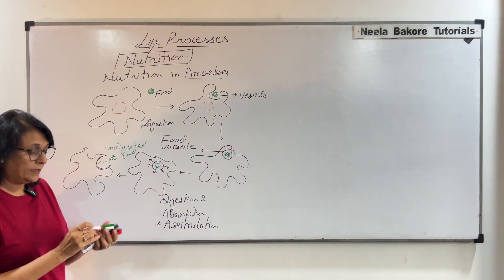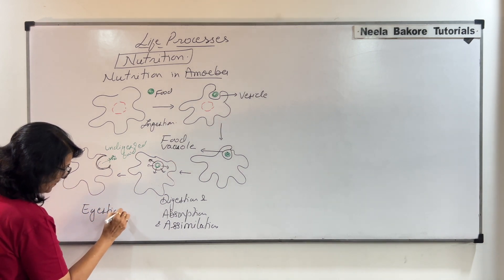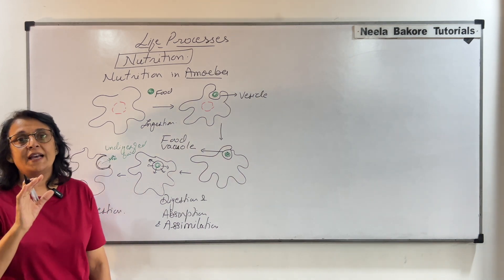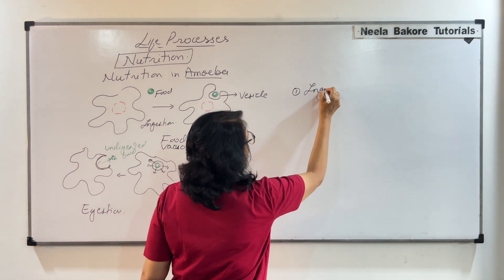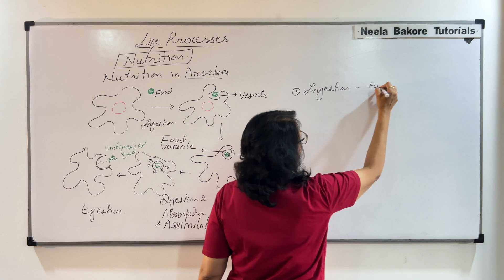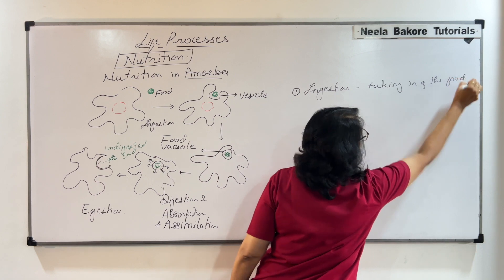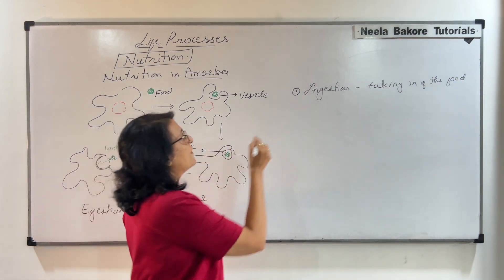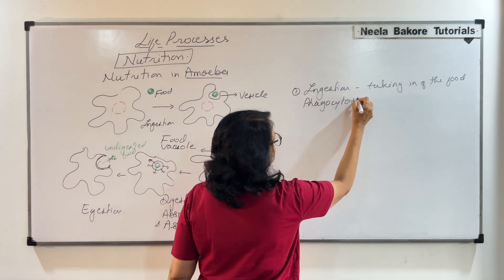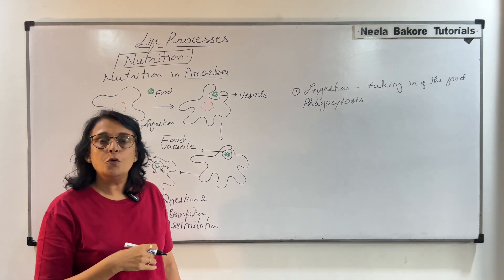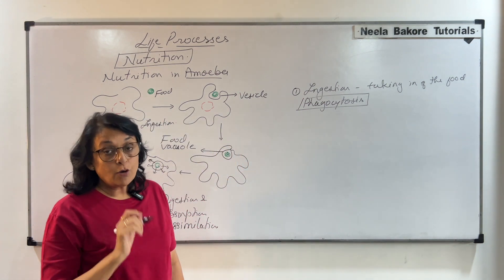In the last step, the vesicle opens out and the remaining undigested material is thrown out. This process is known as egestion. So in these five steps amoeba has taken its nourishment. The first step was ingestion — taking in the food. This process of taking in food is also known as phagocytosis.